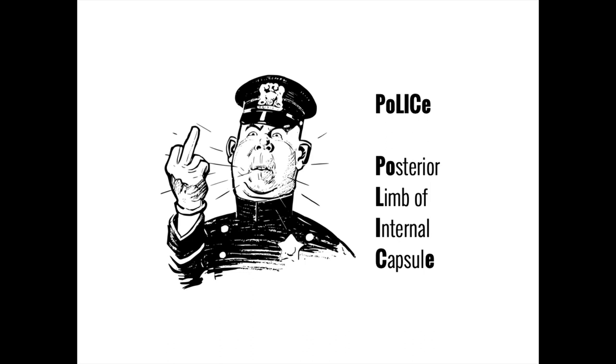You can remember the core function of the posterior limb of the internal capsule to bypass the bureaucracy of the basal ganglia by thinking of it as a policeman going rogue and flipping the bird to the basal ganglia as it drives by on its way to the spinal cord.